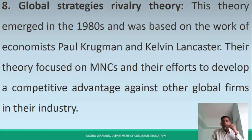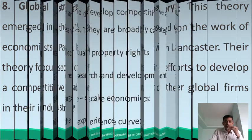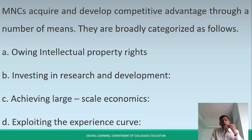The eighth theory is Global Strategy Rivalry Theory, developed in the 1980s. It was based on the work of economists Paul Krugman and Kelvin Lancaster. Their theory focuses on MNCs and their efforts to develop market advantage against other global firms in their industry. MNCs acquire and develop competitive advantage through a number of means, including Intellectual Property Rights.